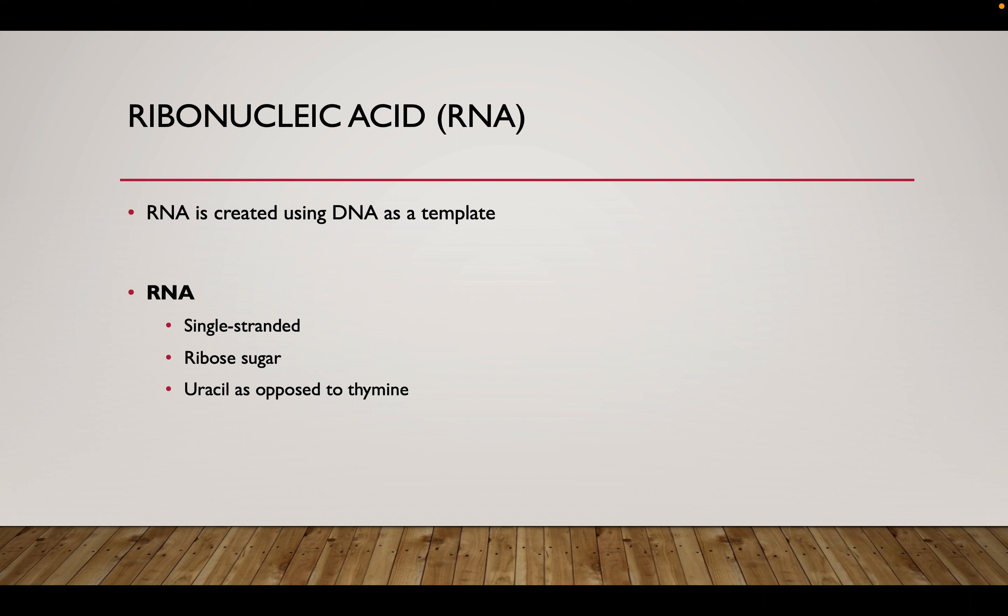So that's DNA. Let's look at RNA now. So RNA is used to make proteins and you get the RNA using DNA as a template. So RNA is single-stranded generally. It contains a ribose sugar instead of a deoxyribose, and it contains the nitrogenous base uracil instead of thymine.